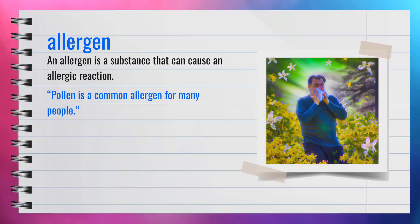The word allergen, spelled A-L-L-E-R-G-E-N, is a noun. Another term for allergen is irritant. For example, pollen is a common allergen for many people. In essence, an allergen is a substance that can cause an allergic reaction.